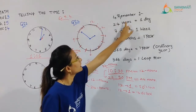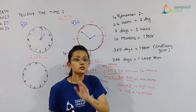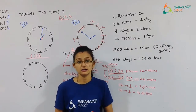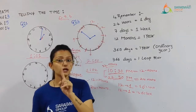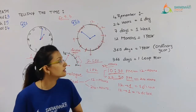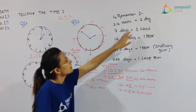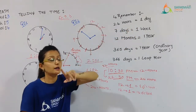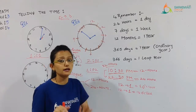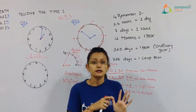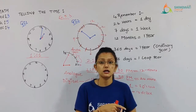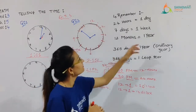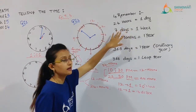Every 24 hours makes one day — there are 24 hours in one day. In a week, there are seven days: Sunday, Monday, Tuesday, Wednesday, Thursday, Friday and Saturday. Every one week has seven days.